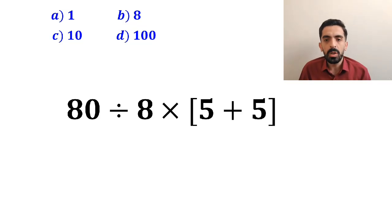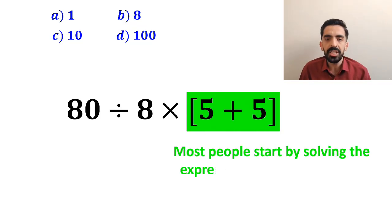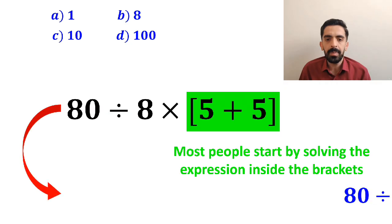In the first step, most people start by solving the expression inside the brackets and replace it with 80 divided by 8 multiplied by 10.